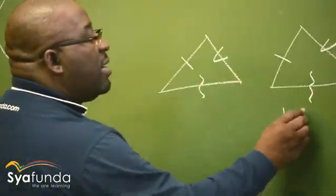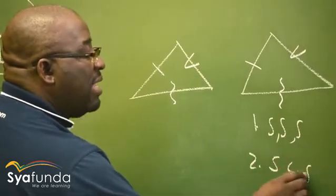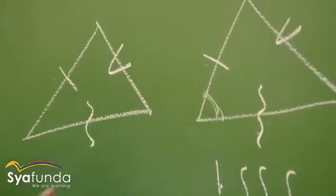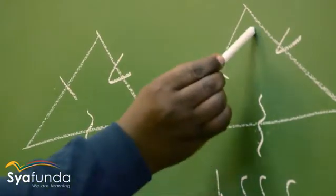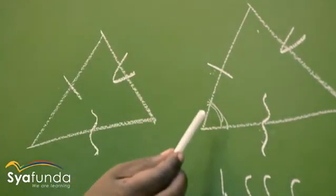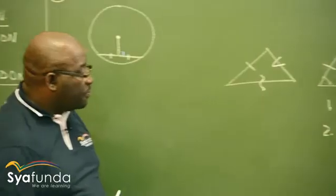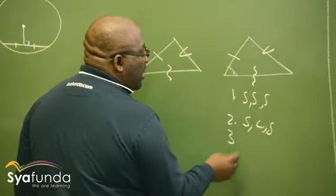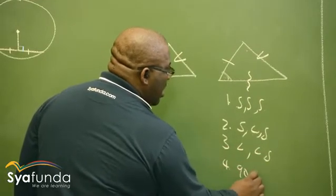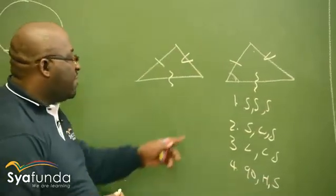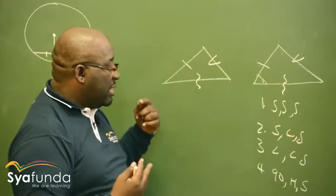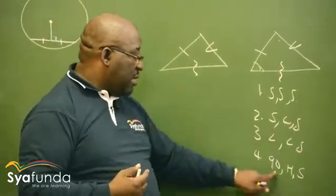There are four cases of congruency. Number one: side, side, side. Number two: side, angle, side - remember the angle must be the included angle. What is an included angle? If I'm talking about this side and this side, the angle in between them is the included angle - I can't use any other angle. Number three: angle, angle, side. Number four: 90 degrees, hypotenuse and the side. You compare the two triangles - if three corresponding sides are the same, the two triangles are congruent, and similarly for the other cases.